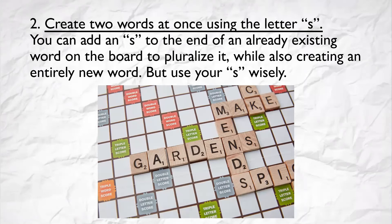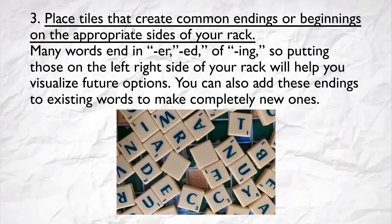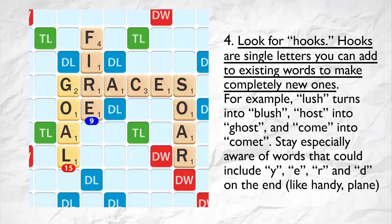Trick 3: Play tiles that create common endings or beginnings on the appropriate sides of the rack. Many words end in -ER, -ED, or -ING, so putting those on the right side of your rack will help you visualize future options. You can also add these endings to existing words to make completely new ones. Trick 4: Look for hooks. Hooks are single letters you can add to existing words to make completely new ones. For example, 'lush' turns into 'blush,' 'hose' into 'those,' and 'come' into 'comet.'